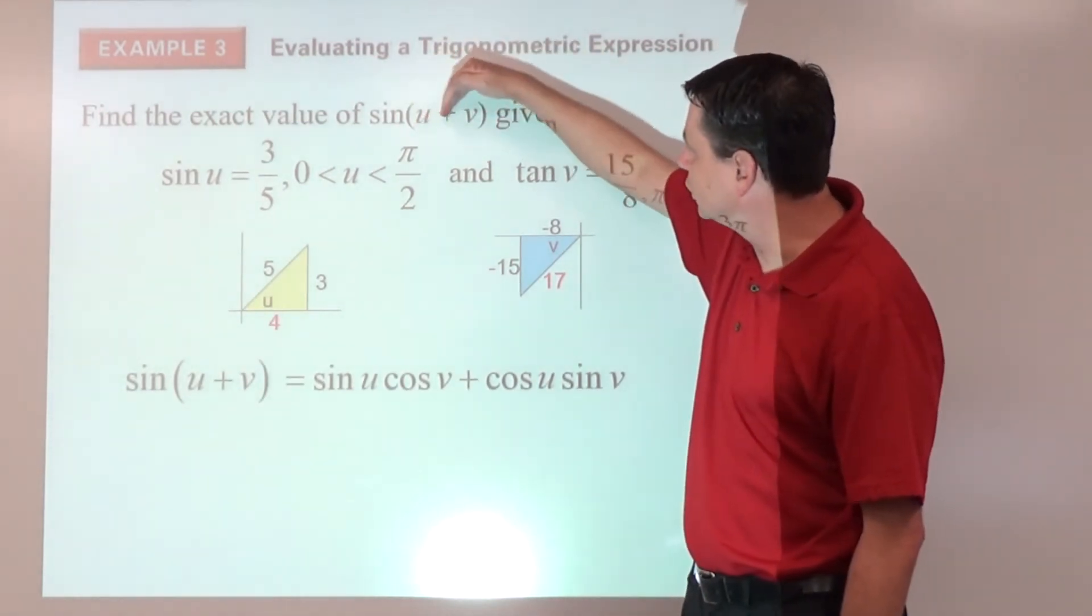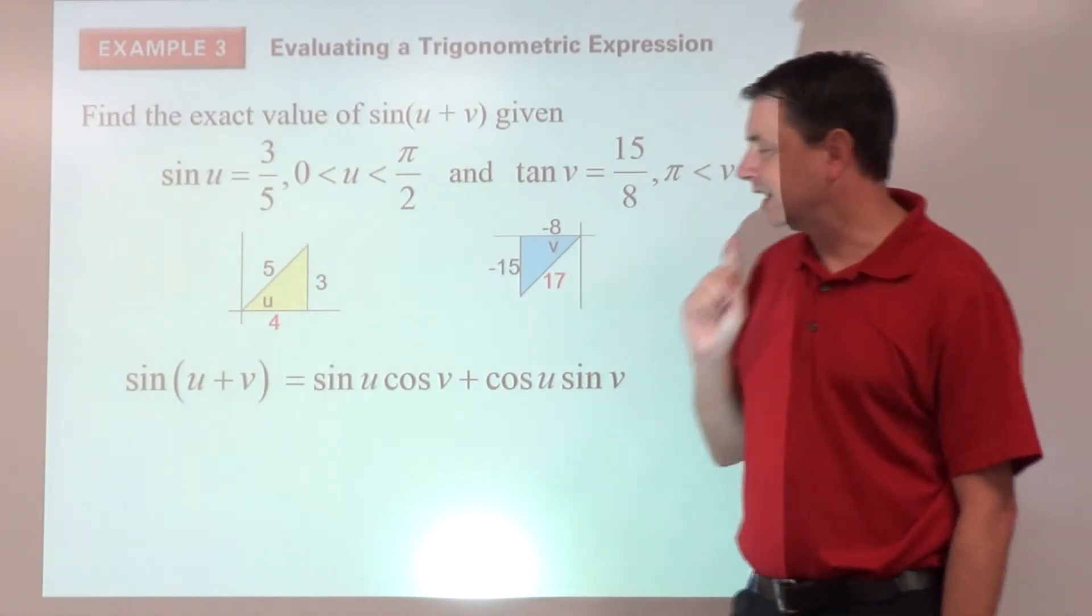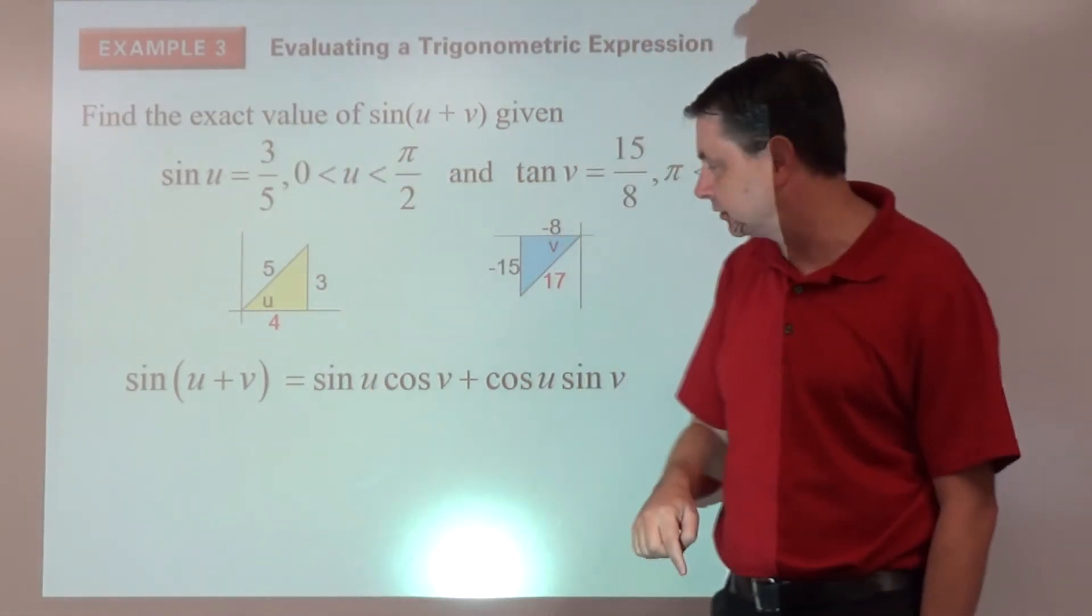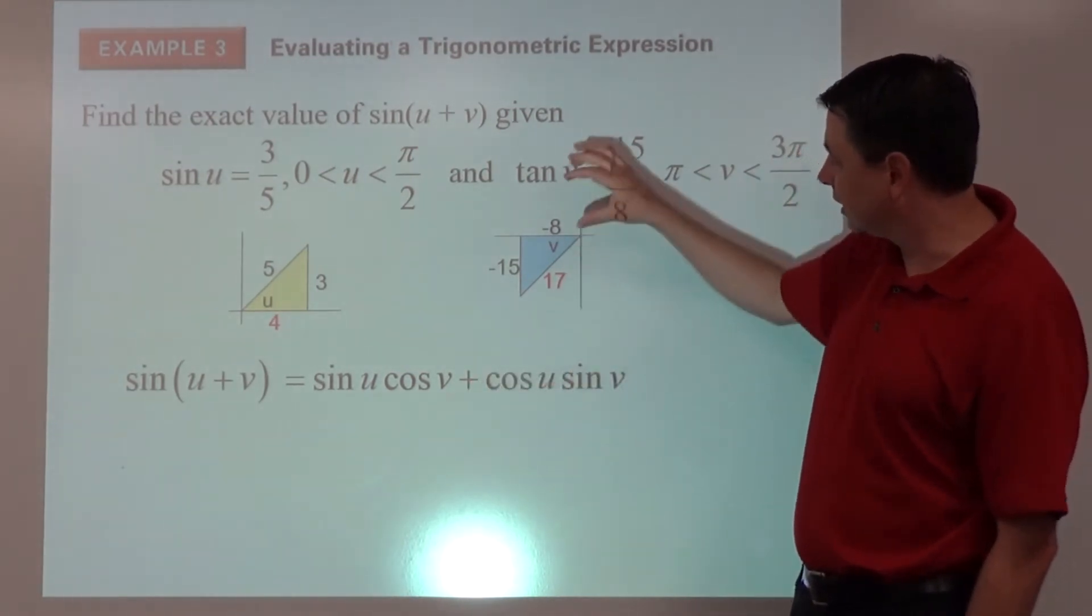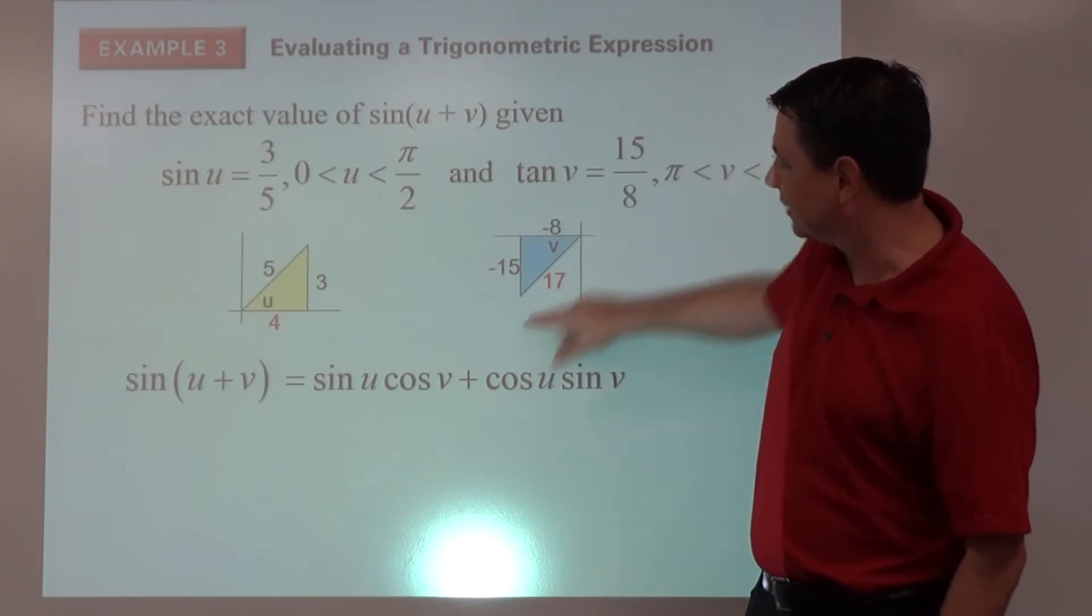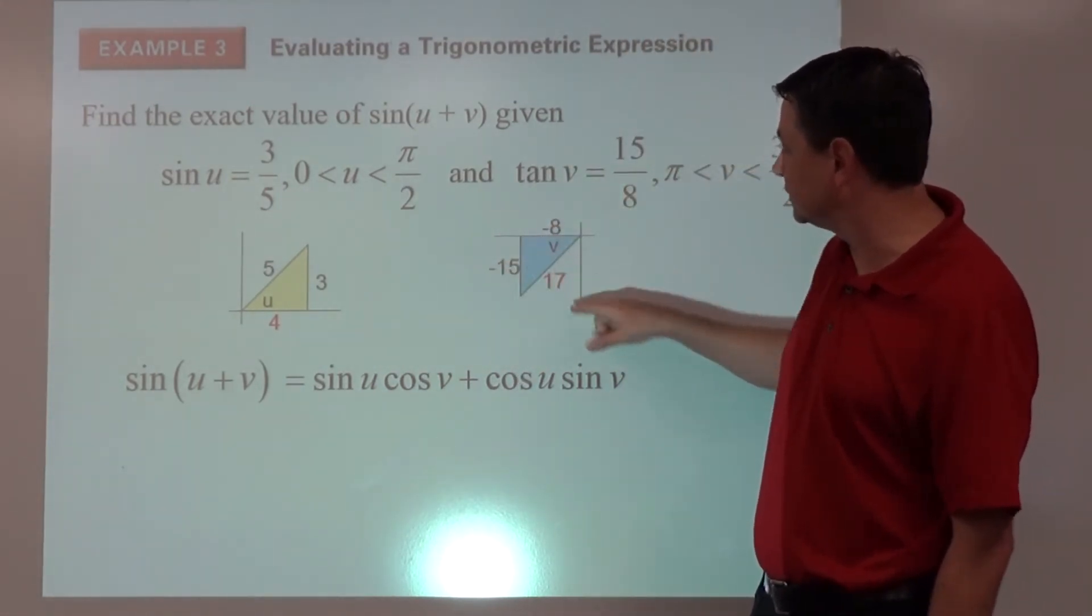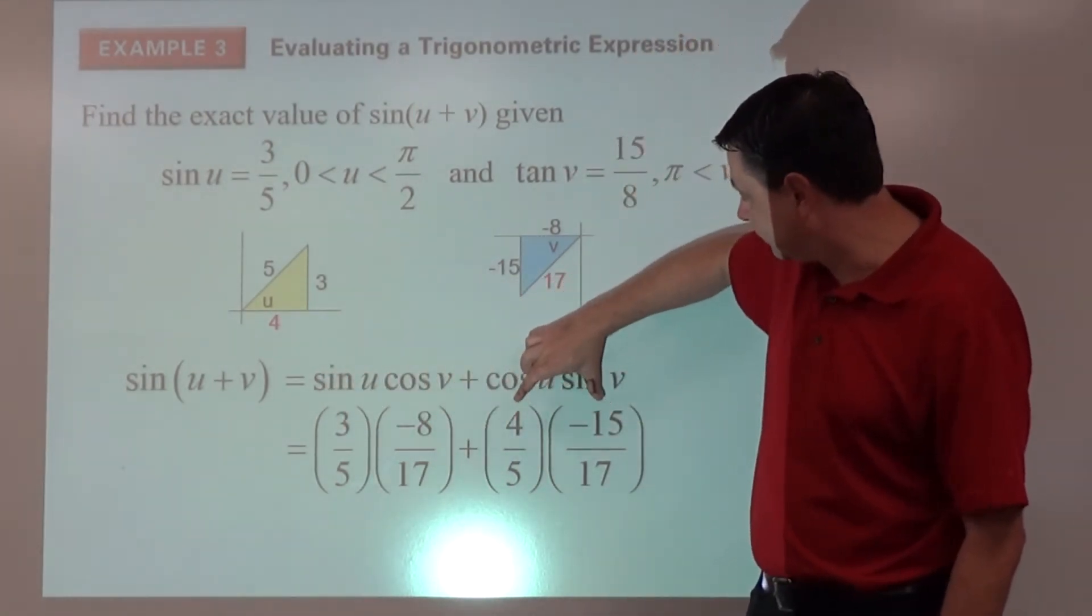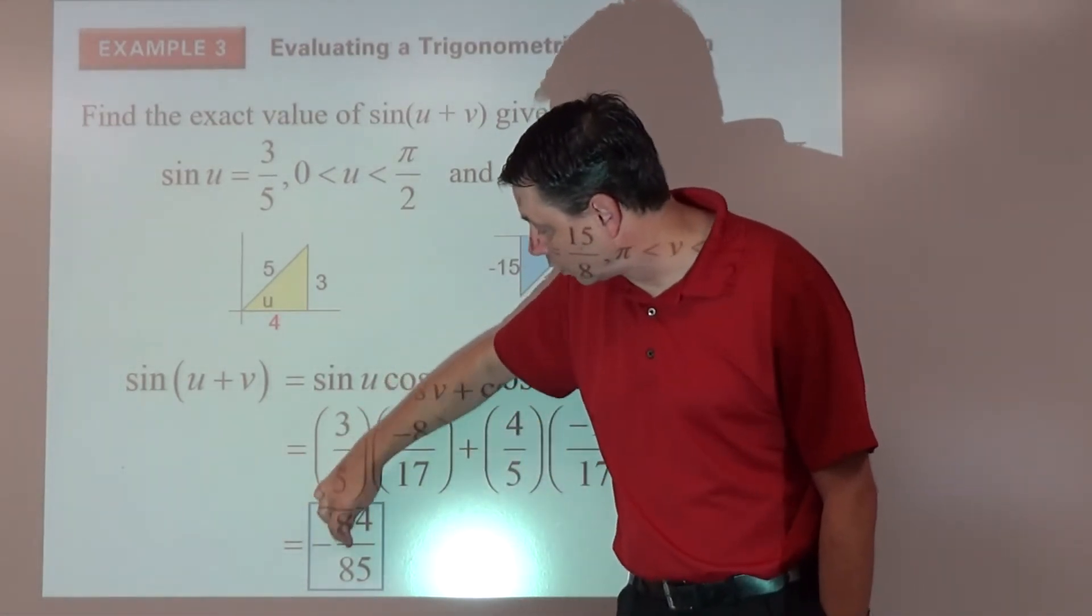Alright, so now we're ready to do sine of u plus v, which we know the formula is sine of u times the cosine of v plus the cosine of u times the sine of v. So it's not the sine of 3 fifths. The sine of u is 3 fifths. So we're going to replace this with 3 fifths. Cosine is adjacent divided by hypotenuse. So that's going to be 4 fifths plus cosine of—I'm sorry, that's cosine of v. My apologies. So cosine of v is over here. Negative 8 over 17 is going to go there. Cosine of u, the 4 fifths that we were talking about before, is going to go here. And the sine of v, negative 15 over 17. Now maybe a little calculator work. Negative 24 plus negative 60 all over the common denominator of 85. So our answer is negative 84 over 85.